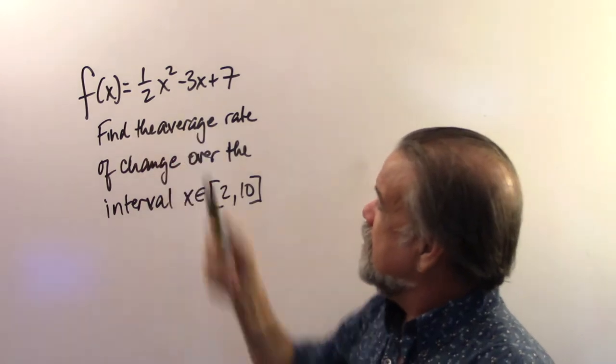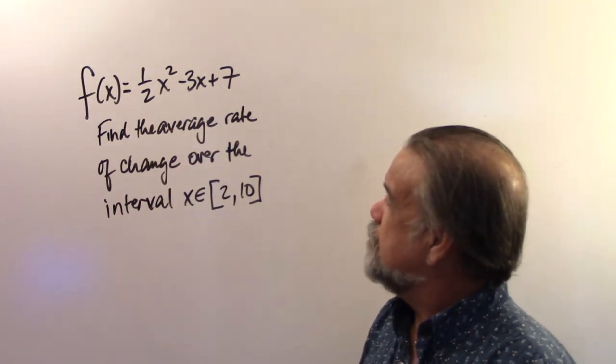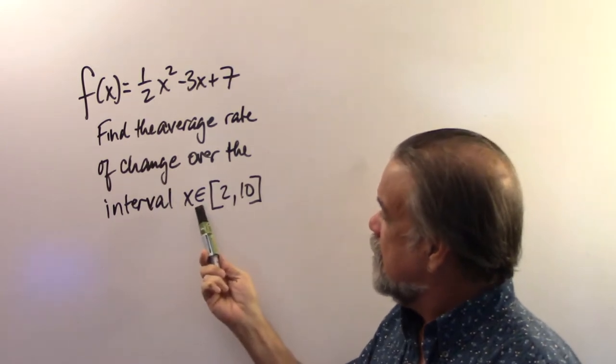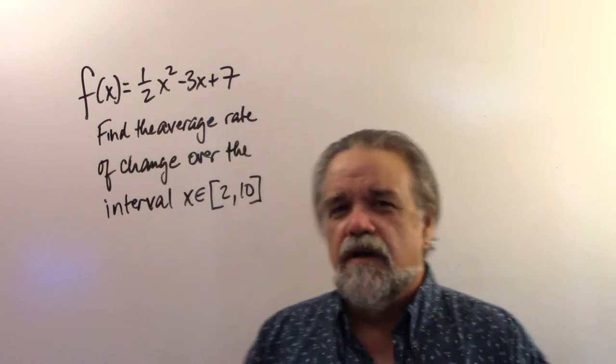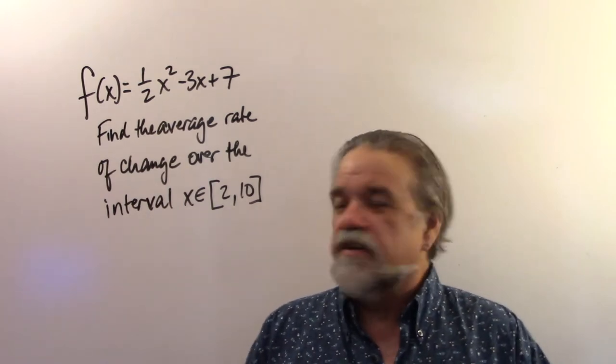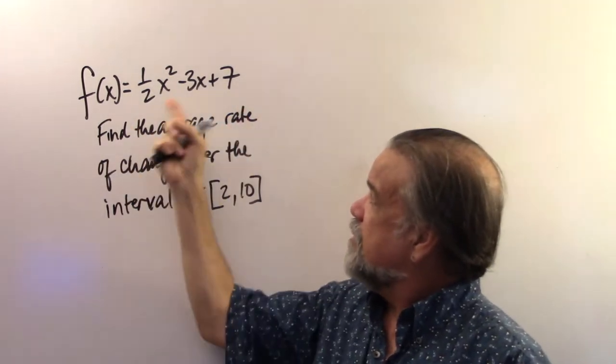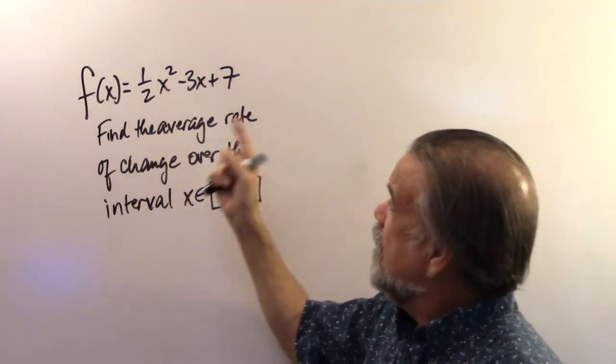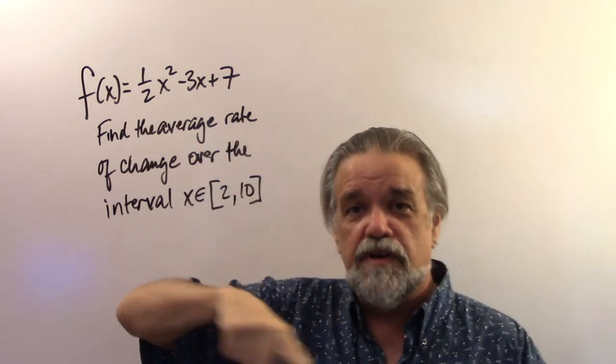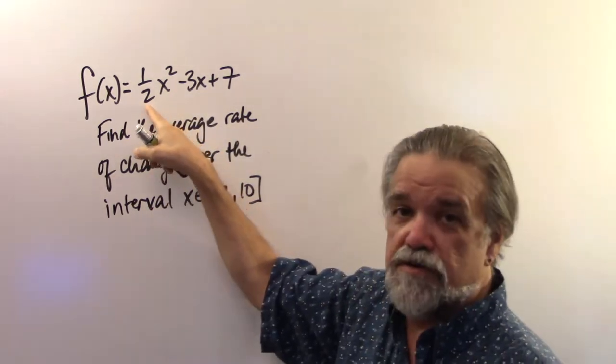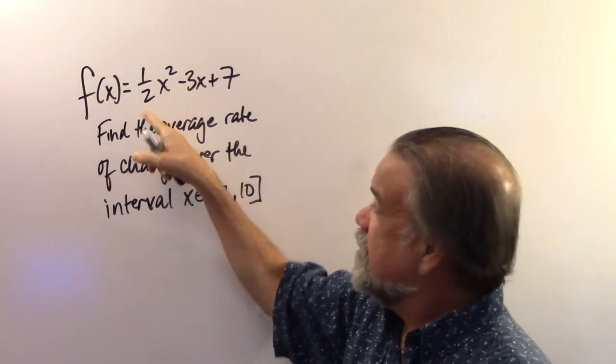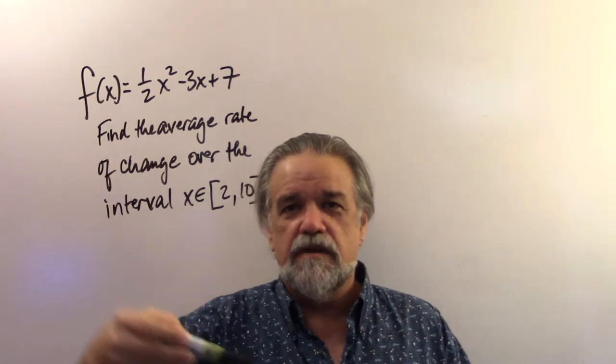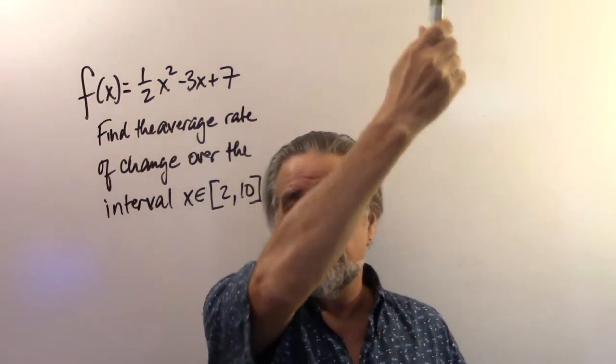It says f(x) equals one-half x squared minus 3x plus 7. Find the average rate of change over the interval x is between 2 and 10. Okay, let's think about this for a second. First off, f(x), I know what that is. That's a quadratic function. I can tell, I've seen these things before. And it's a quadratic function that opens up because this first coefficient is positive. And what I know about quadratic functions is they go down and then, with this type, they go down and then they go up like that.